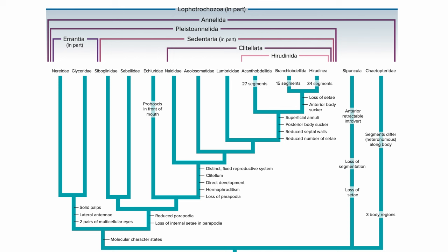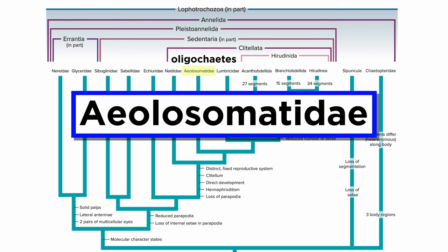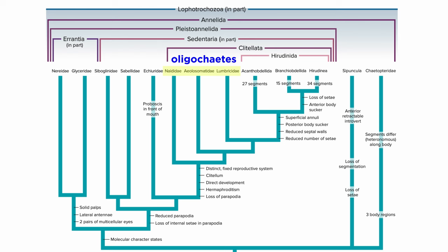Let's start by going back to our cladogram. Notice that Clitellata is a monophyletic grouping within Annelida. The oligochaetes are generally considered to consist of three families: Naididae, Aeolosomatidae, and Lumbricidae — though like the term polychaete, the term oligochaete is often considered to be merely descriptive.